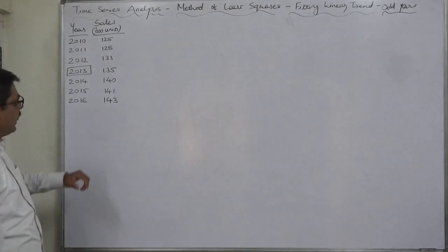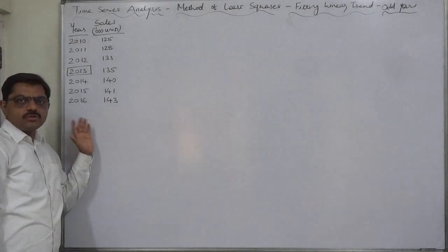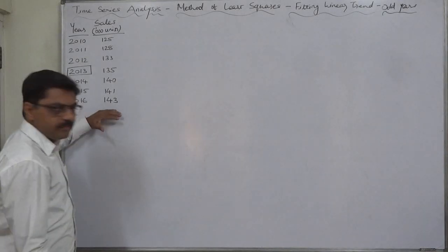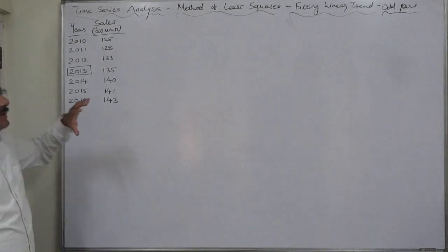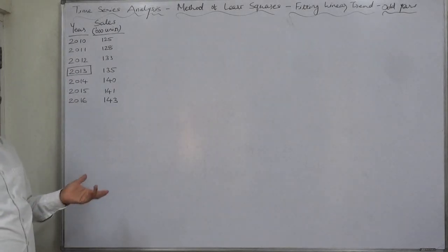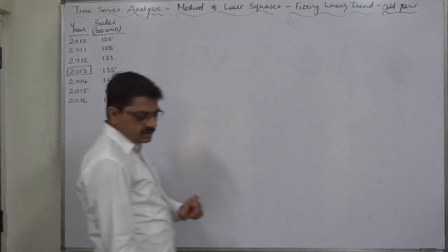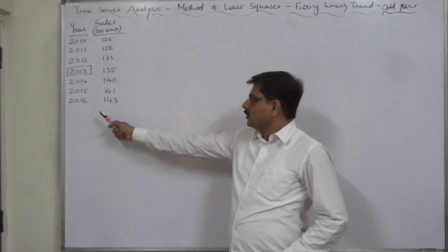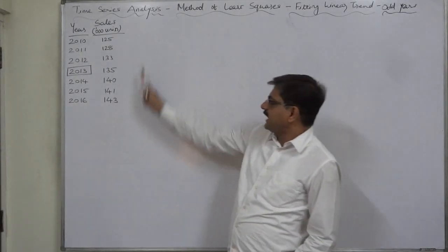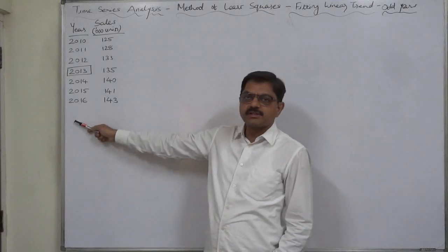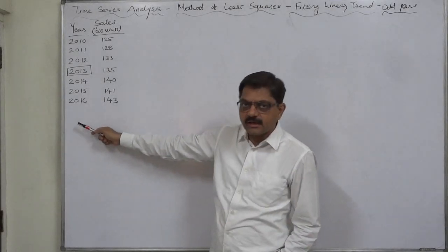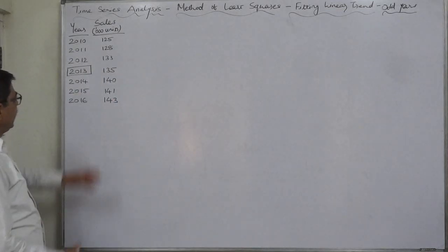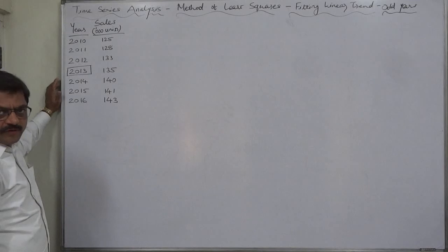This change in sales is because of effect or influence of time, we believe. That's why now we are going to establish a functional relationship, a mathematical relationship, assuming a linear relationship between these two variables. That relationship will be helpful to estimate the sales figures of the years, a few years rather, beyond 2016.